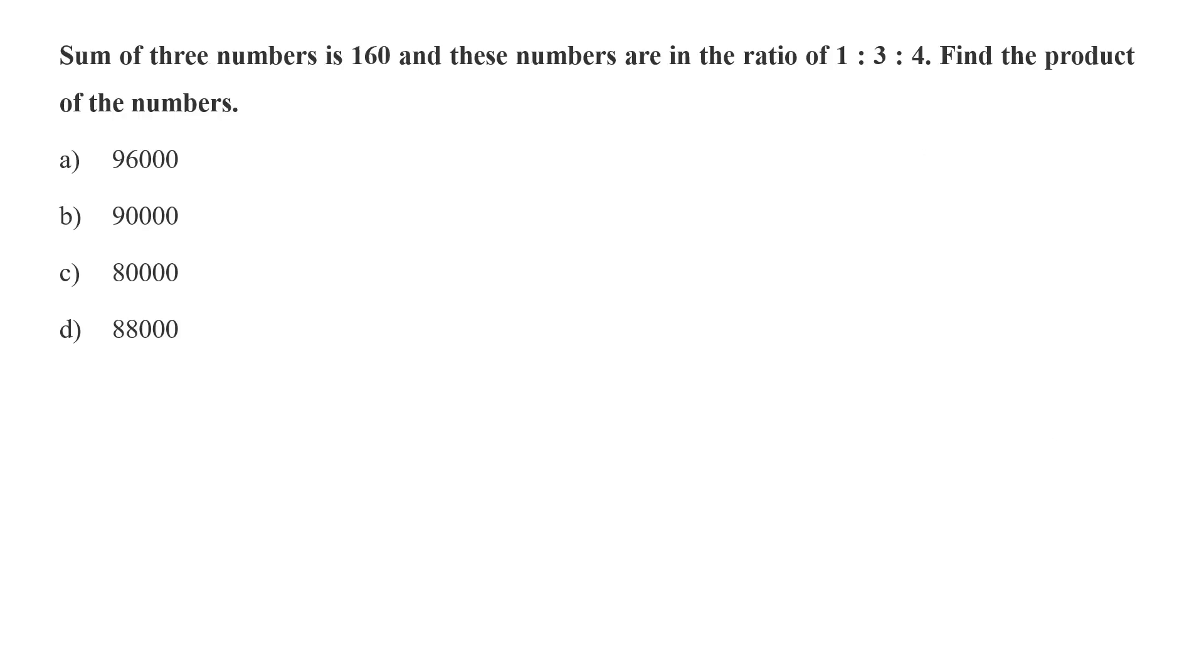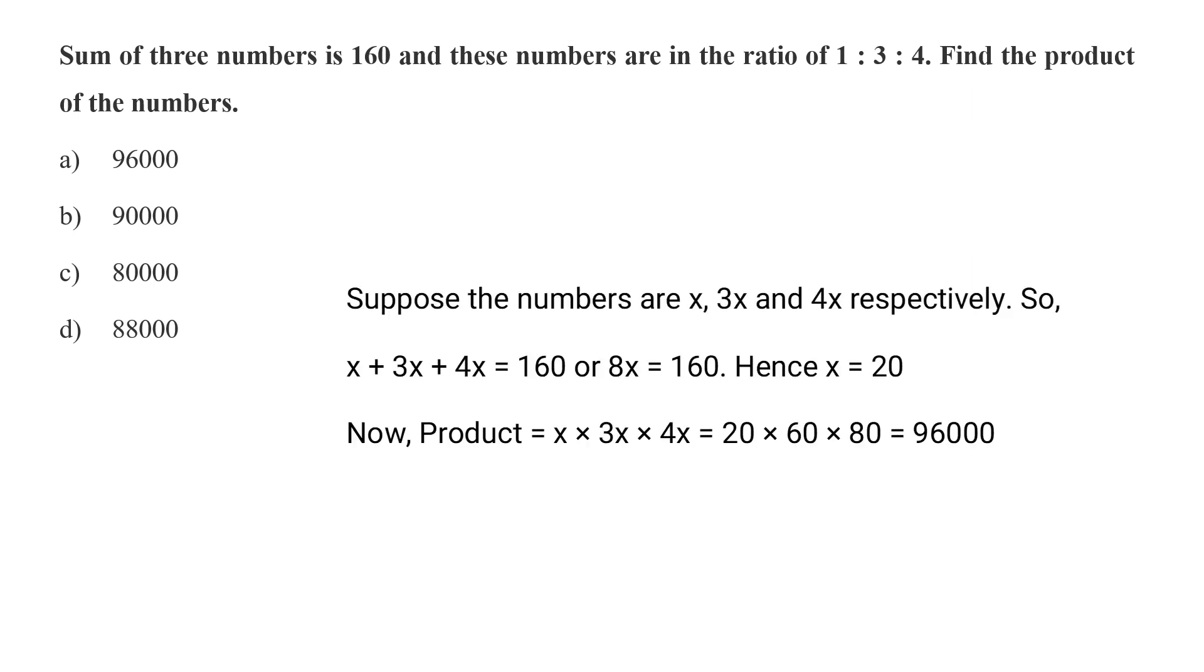Sum of 3 numbers is 160 and these numbers are in ratio 1:3:4. Find the product of these numbers. Is it 96,000, 90,000, 80,000, or 88,000? To solve this, let's assume the first number is X. So now as per the ratio, the numbers would be X, 3X, and 4X, and the sum of them is equal to 160. So if we sum them, then 8X would be 160 and X would be 20. So now the numbers would be 20, 60, and 80. And their multiplication would yield you 96,000. That means option A. So option A is the correct answer.